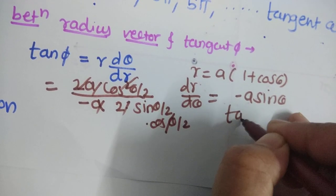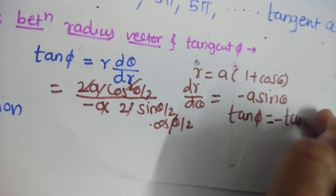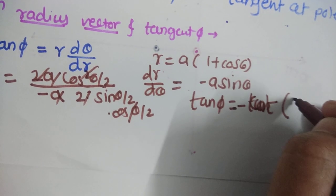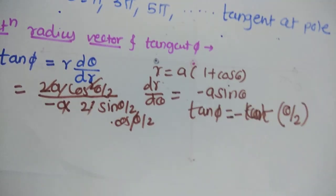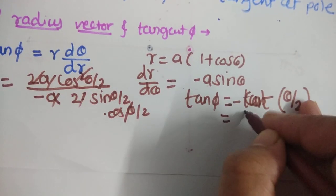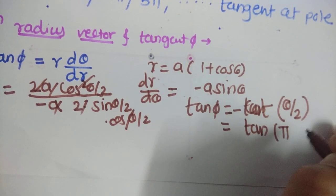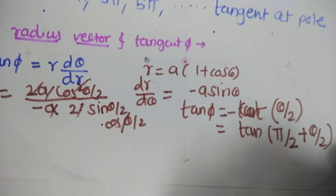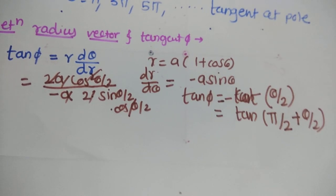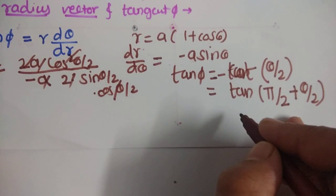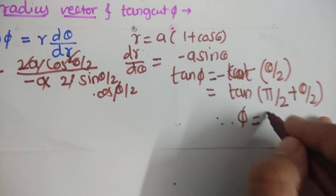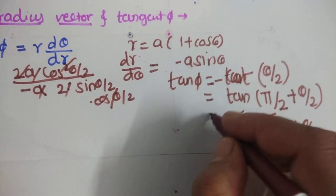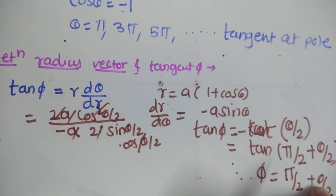So tan φ = −cot(θ/2), which can be written as tan(90° + θ/2), because tan(90° + θ) = −cot θ and tan is negative in the second quadrant. Therefore, φ = π/2 + θ/2, which is the angle between the radius vector and the tangent.